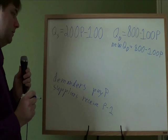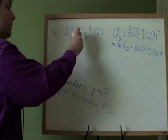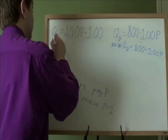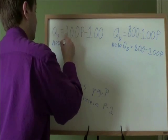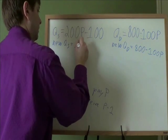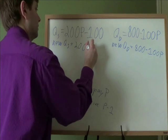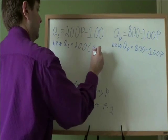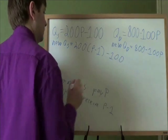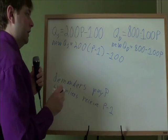The quantity supplied, on the other hand, something has changed for us. We're not getting P dollars anymore. We're only getting P minus $1. So for the new quantity supplied, where we used to have P dollars, we're going to put P minus 1 in parentheses, and then we need to simplify that.